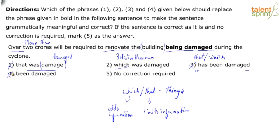The fourth option can also be ruled out, because when you have 'been,' you either have to have 'has,' 'had,' or 'have.' It's a perfect participle construction — present or past participle is required. So obviously you need to have that, and it's not there. Therefore, the right answer from the given options is option two: 'Over two crores will be required to renovate the building which was damaged during the cyclone.'